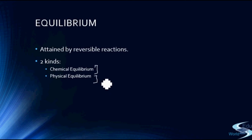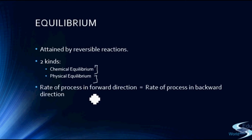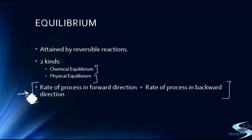The classification into chemical equilibrium and physical equilibrium is just for clarity, since the processes we study can be both physical and chemical. The basic phenomena, characteristics, definition, and meaning of equilibrium remain the same for both. Equilibrium is nothing but the condition where the rate of the process in the forward direction equals the rate of the process in the backward direction. We will study this point in much more detail in our next session. Thanks for watching Edupedia World videos.